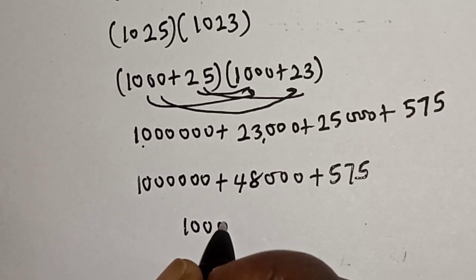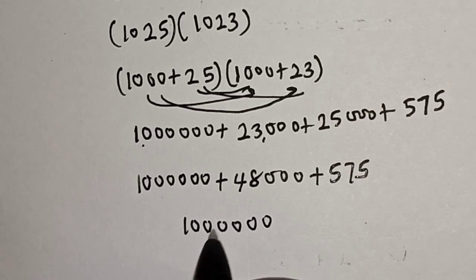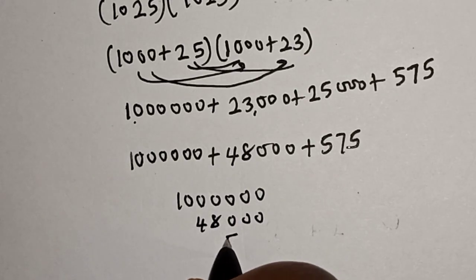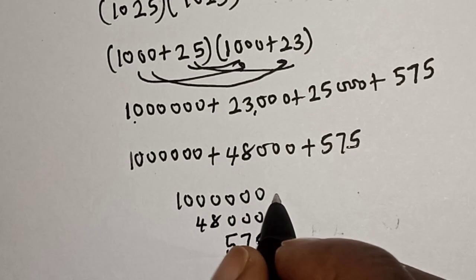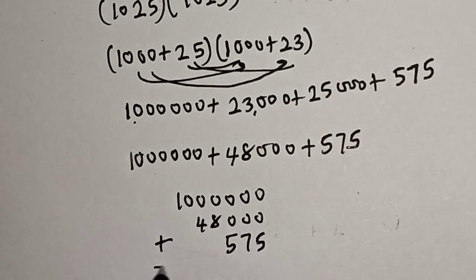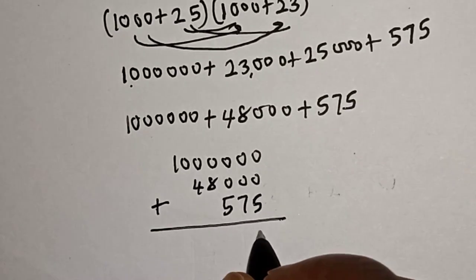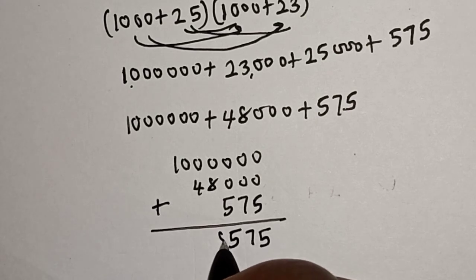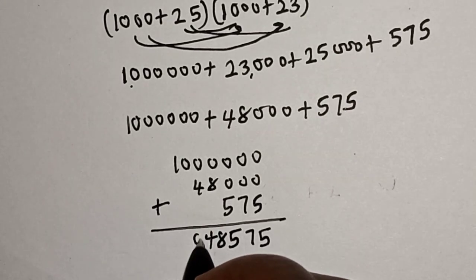Now let's add everything together. We have one million, then 48,000 and 575. We add them together, we have 1048575.